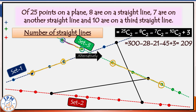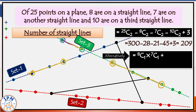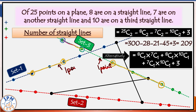Another approach: pick one point at a time. For all lines other than the three collinear lines, we need two points from different sets. Picking one point from set 3 (8C1 ways) and one from set 1 (7C1 ways) gives a unique line — multiply to get 8C1 × 7C1. Similarly, one from set 3 and one from set 2 gives 8C1 × 10C1 ways, and one from set 1 and one from set 2 gives 7C1 × 10C1 ways. Add 3 for the three collinear lines, and the answer tallies.